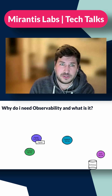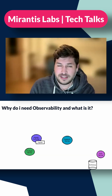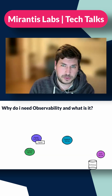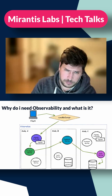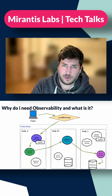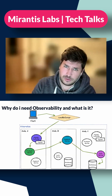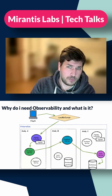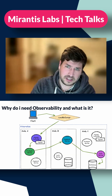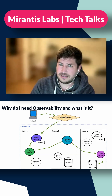Today, modern applications are built and deployed as microservices and distributed systems. Observability lets us understand if our application or whatever we are operating is in a healthy state and working as intended.